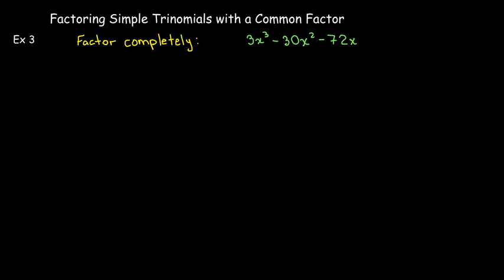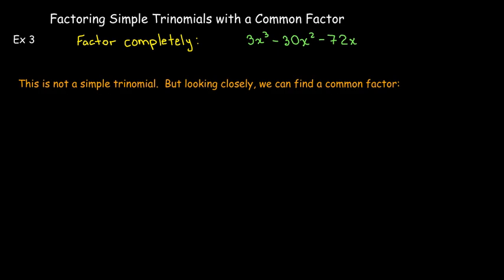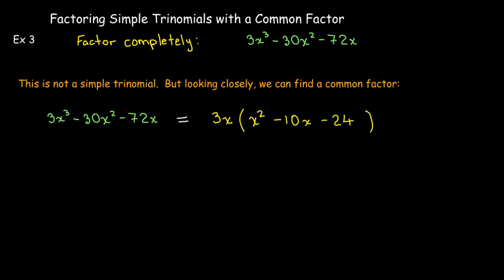In this example, we see that we don't have a simple trinomial. But no matter what type of factoring we're doing, the first thing we should be looking for is a common factor. And there is a number which divides evenly into 3, 30, and negative 72 — that number is 3.